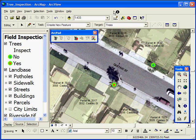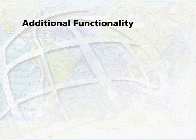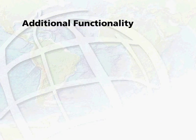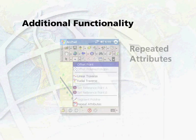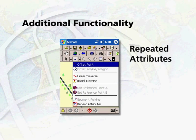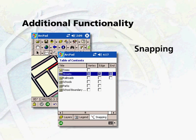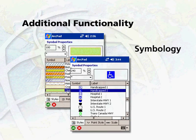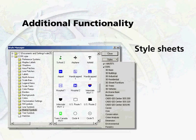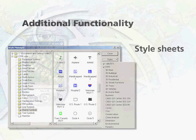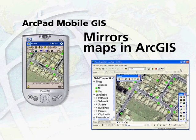ArcPad's advanced mobile data collection features include offsets, repeated attributes, segmented line features, and snapping. ArcPad also supports ArcGIS symbology and style sheets, enabling maps in ArcPad to mirror the appearance of those in ArcGIS.